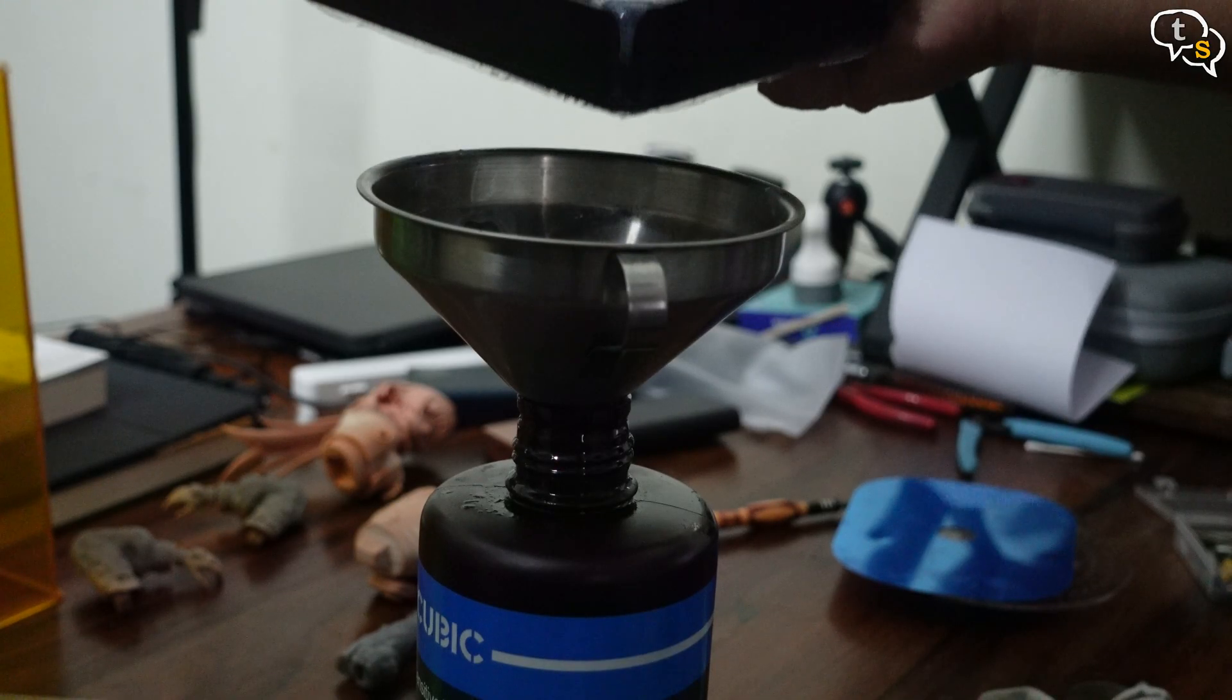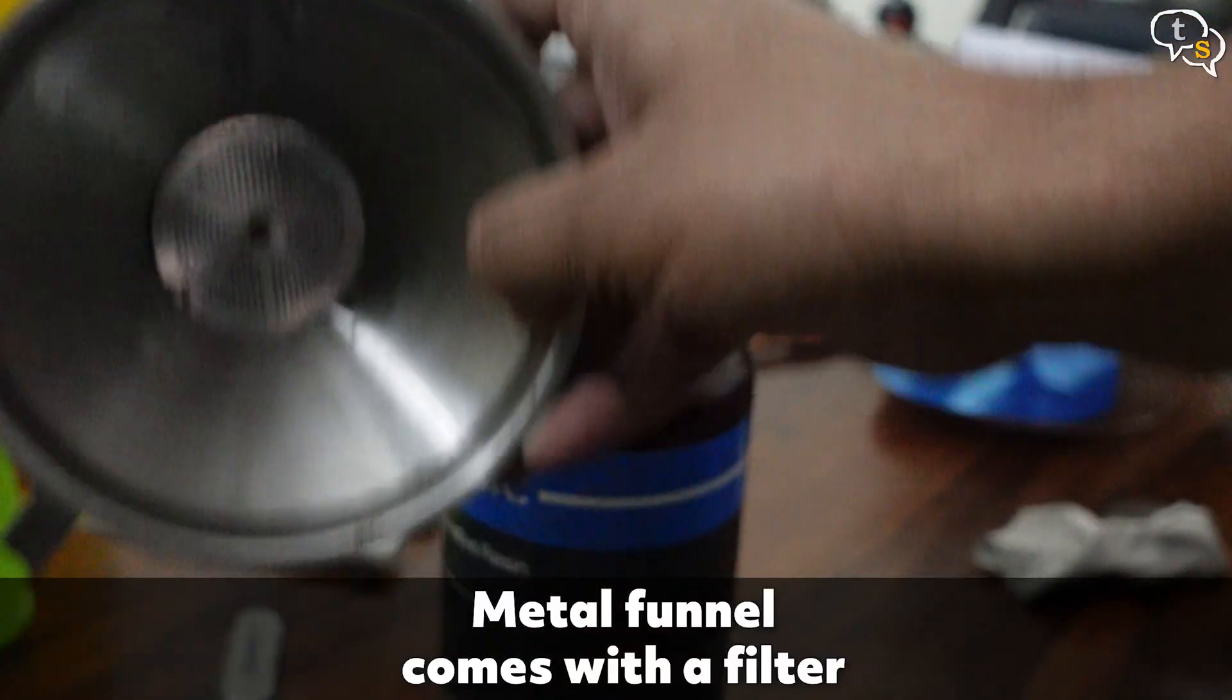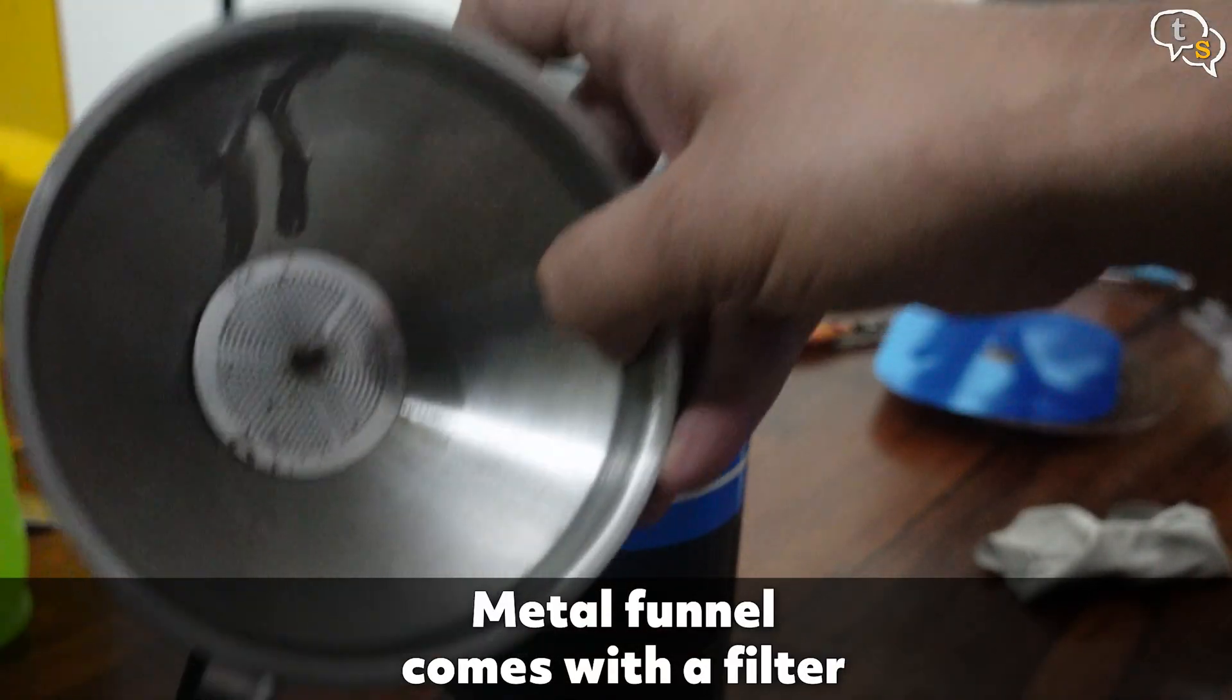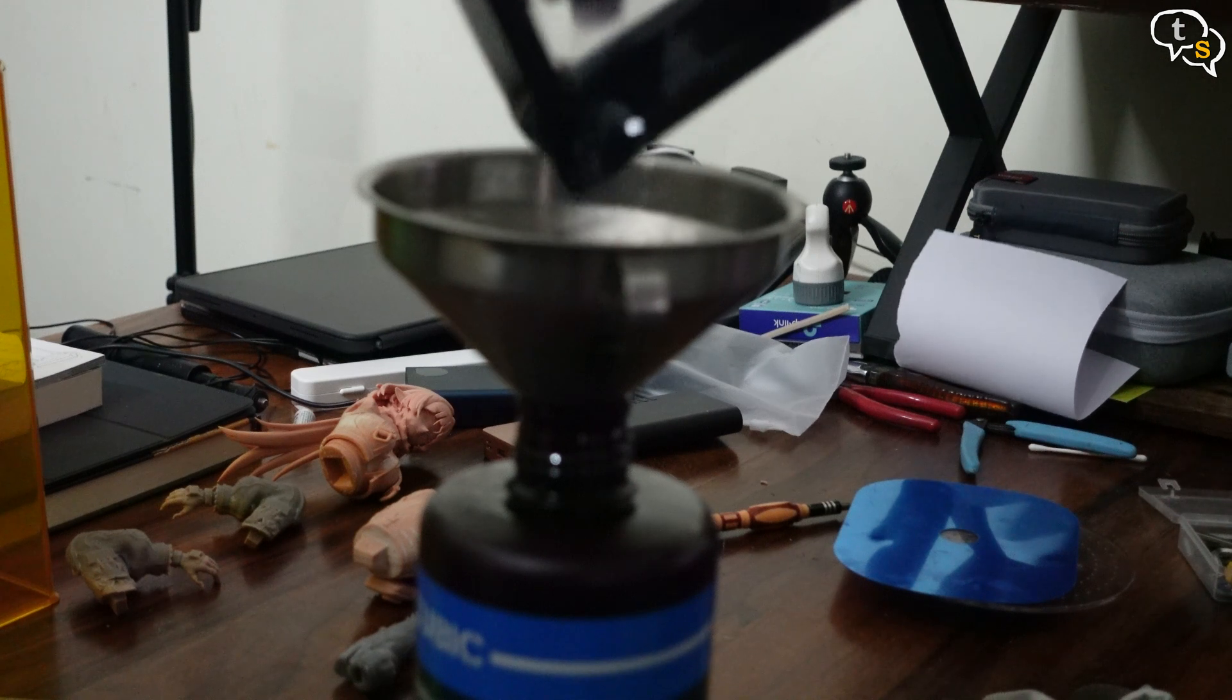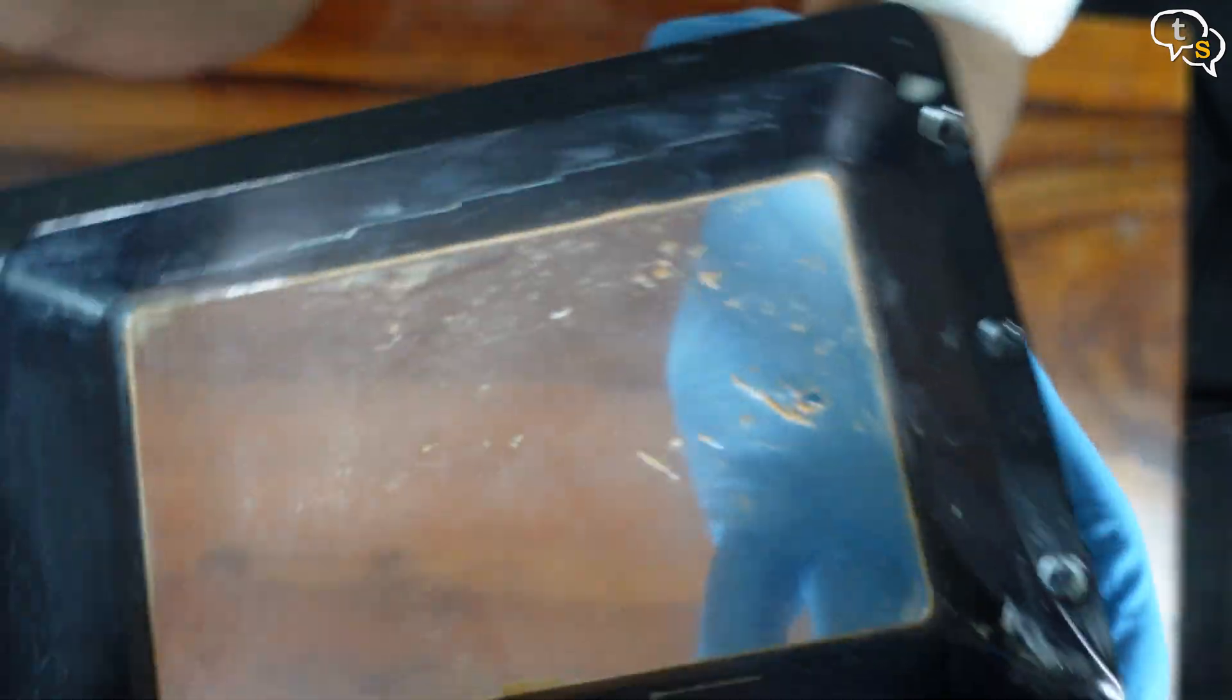Make sure all the resin is emptied into a bottle. I am using this funnel with a filter and this metal one has been a big help as I don't have to keep purchasing more filters. The vat is fully cleaned with isopropyl alcohol, let it dry completely before you move on.